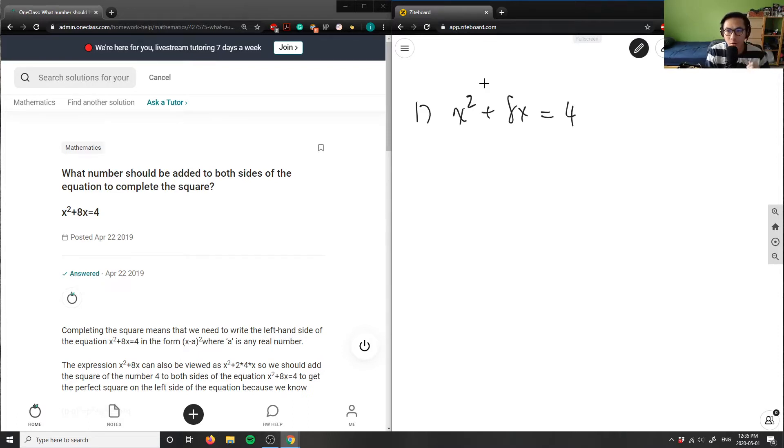I think I've done this problem before, but in order to complete the square, I'm going to move the 4 to the left side so it equals zero. So I have x² + 8x - 4 = 0.